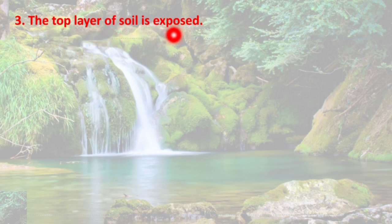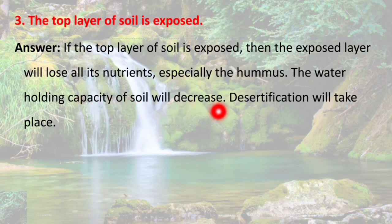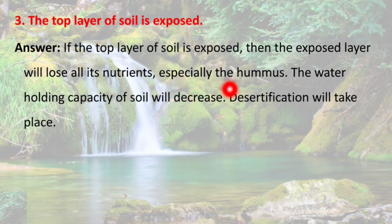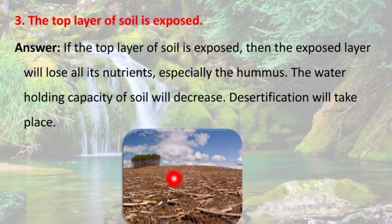If the top layer of soil is exposed, it will lose all its nutrients, especially the humus. The water holding capacity of soil will decrease and desertification will take place. The top layer of soil contains most nutrients — if exposed, humus reduces and soil's water holding capacity decreases, leading to desertification, which is not good for us.